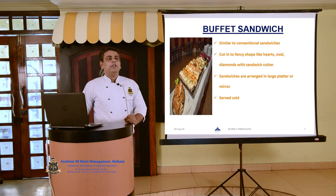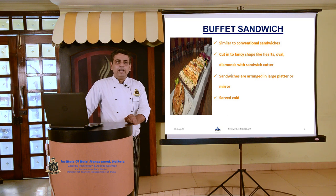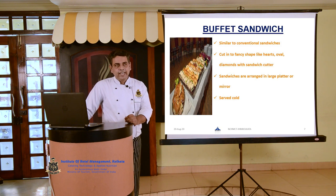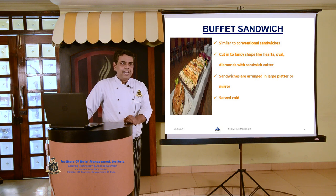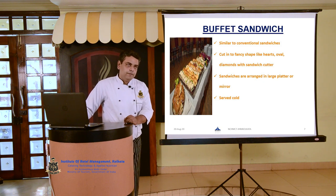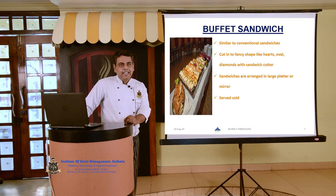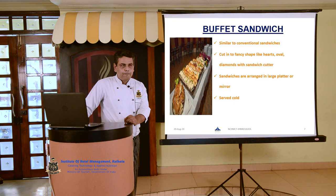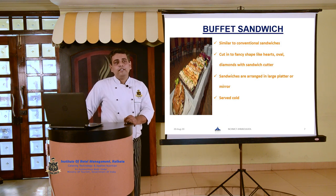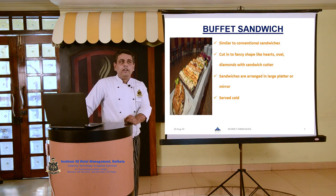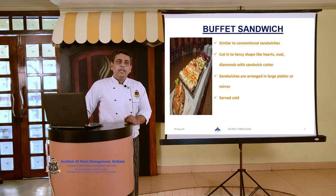The next category is buffet sandwich. These are similar to conventional sandwiches, but the basic difference is in terms of shape. In this variety, the sandwiches are cut into fancy shapes like heart, diamond, oval, triangle, and square with the help of different sandwich cutters. They are served at tea time in banquet parties on a large platter, but there will be a lot of wastage due to the trimmings. So please be mindful of the cost when applying this kind of sandwich for a buffet.